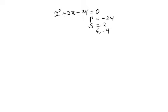When you add 6 plus negative 4, you get 2. When you multiply the two, you will get negative 24. We rewrite the equation. And in the place of 2x, we replace with the two factors. So we have x squared plus 6x minus 4x minus 24 should give us 0.